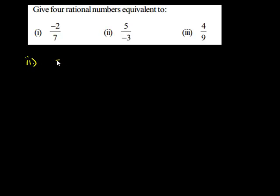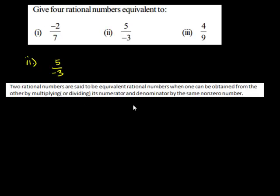Let us move to the second question, that is 5 upon negative 3. Let us first see what equivalent rational numbers are. Two rational numbers are said to be equivalent rational numbers when one rational number can be obtained from the other by multiplying or dividing its numerator and denominator by the same non-zero number.